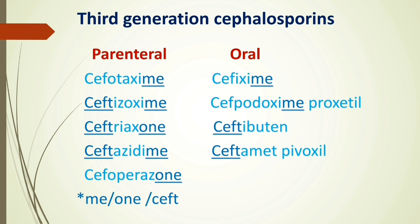There are also some cephalosporin names in the third generation that start with 'ceft' — C-E-F-T. So third generation cephalosporins generally either end with the suffix '-ime' or '-one', or start with the prefix 'ceft'. Examples: ceftametpivoxil, ceftazidime, and ceftriaxone all come under third generation.